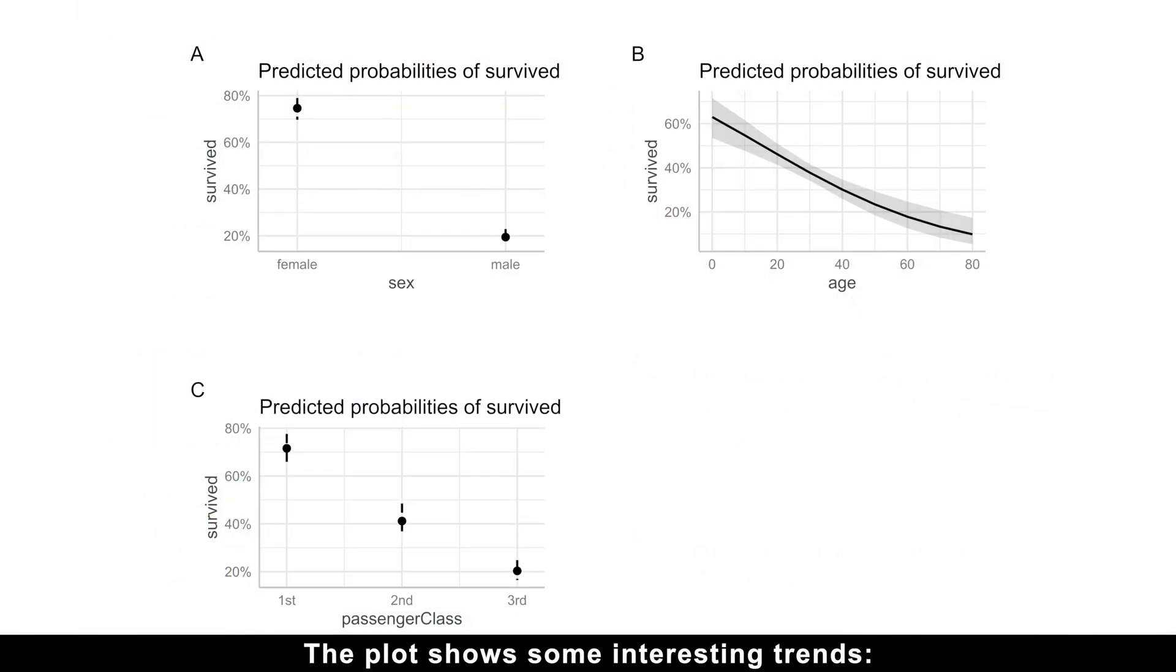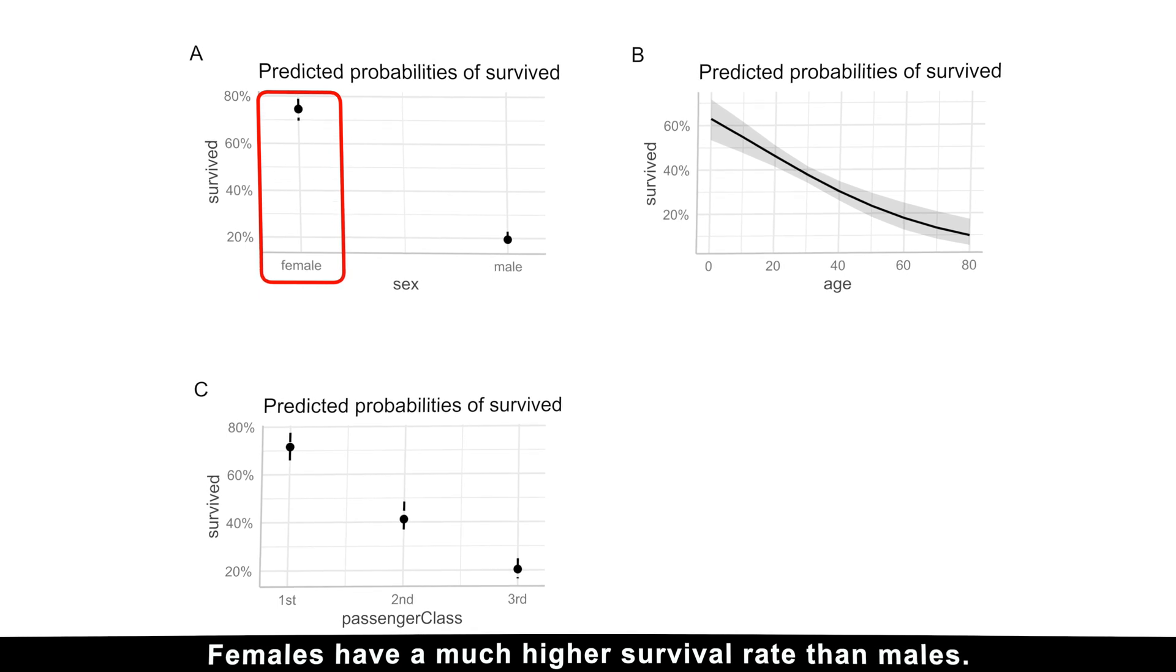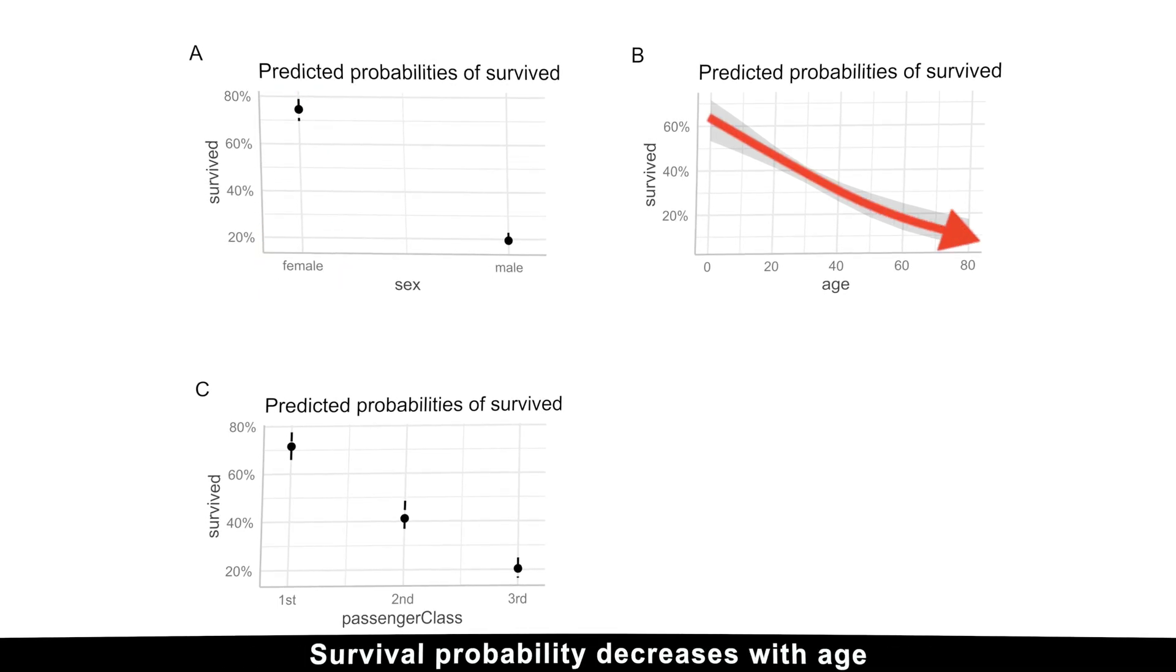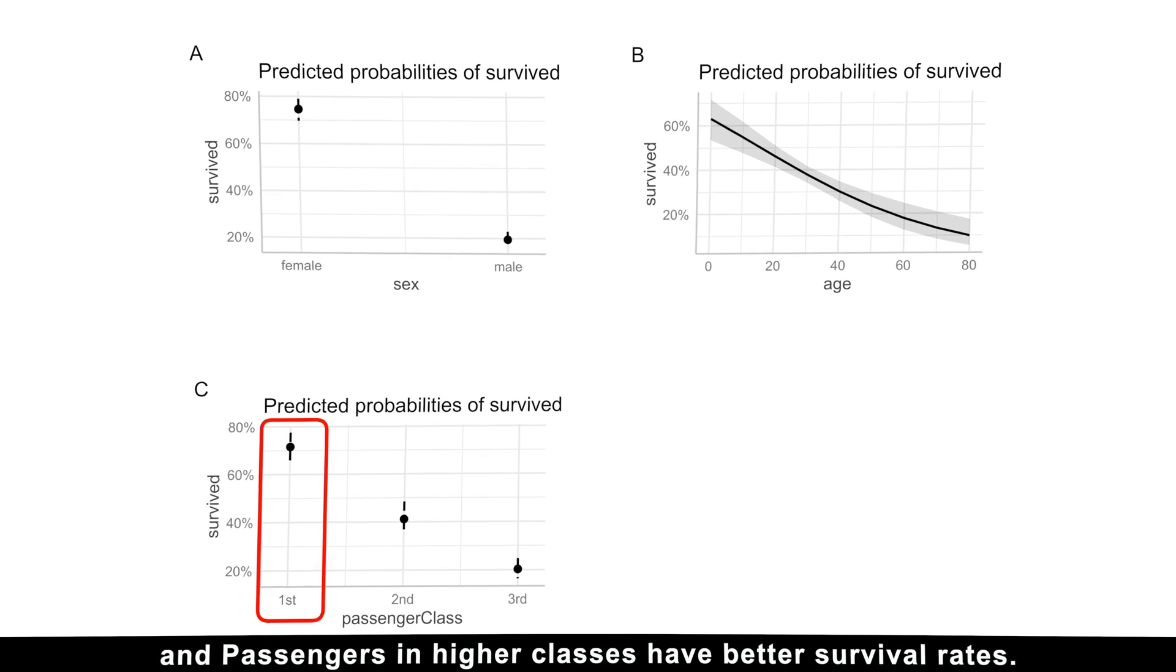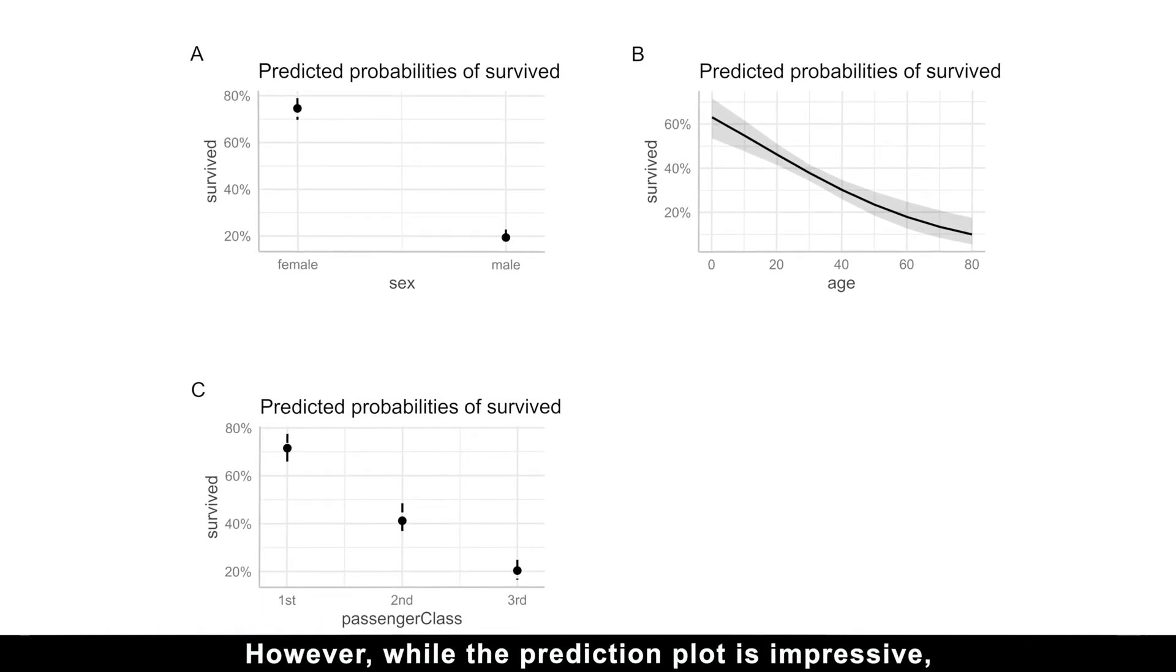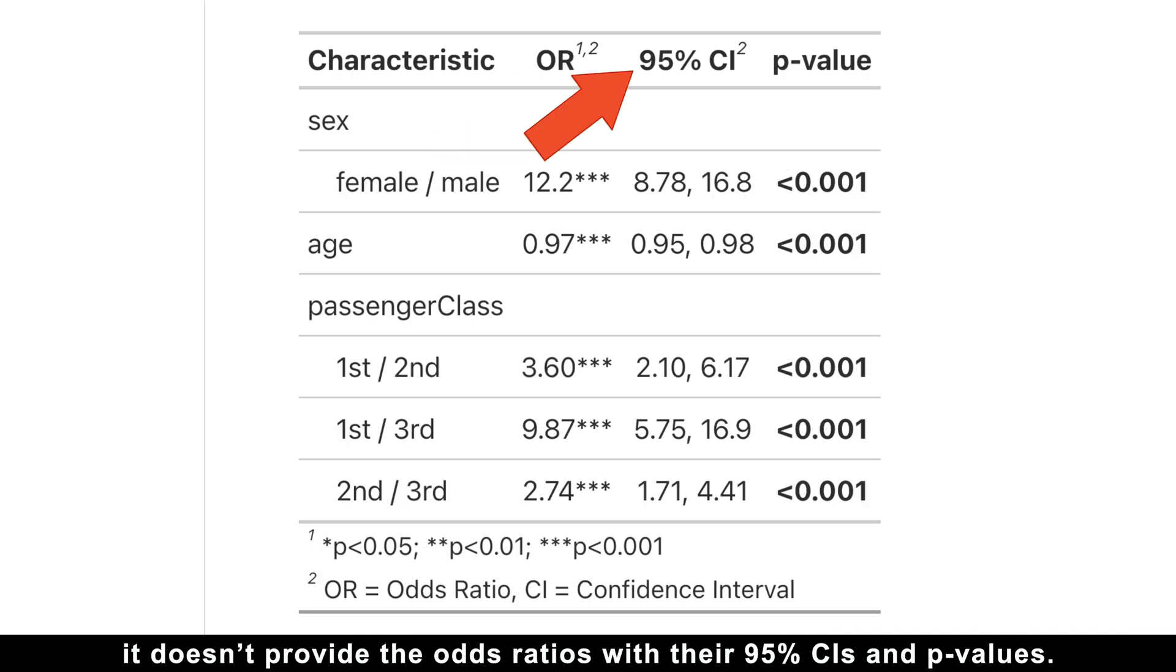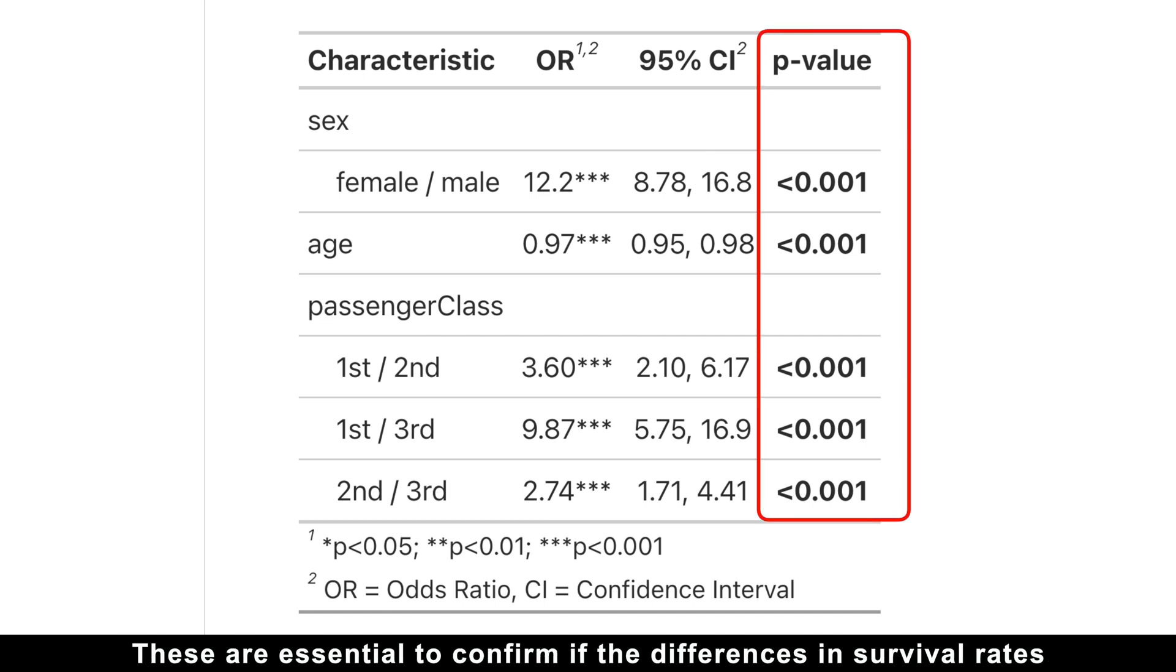The plot shows some interesting trends. Females have a much higher survival rate than males, survival probability decreases with age, and passengers in higher classes have better survival rates. However, while the prediction plot is impressive, it doesn't provide the odds ratios with their 95% confidence intervals and p-values. These are essential to confirm if the differences in survival rates are statistically significant.